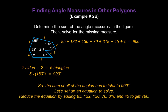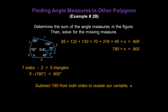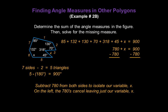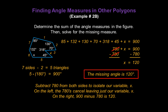Adding 85, 132, 130, 70, 318, and 45 together gives us 780 plus x equals 900. Subtract 780 from both sides — the 780s cancel, leaving just x, and on the right, 900 minus 780 is 120. So x equals 120, or the missing angle is 120 degrees.